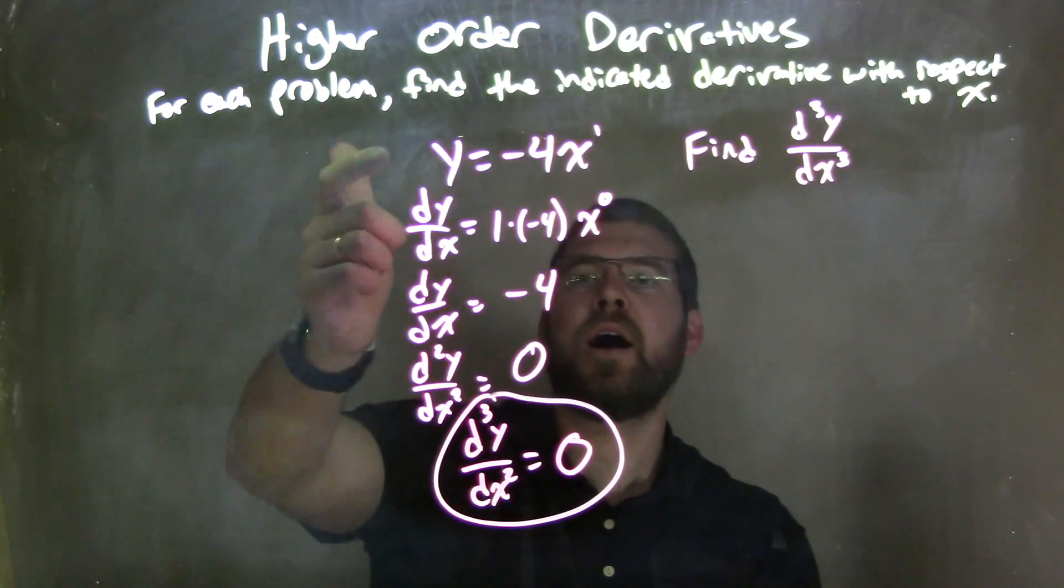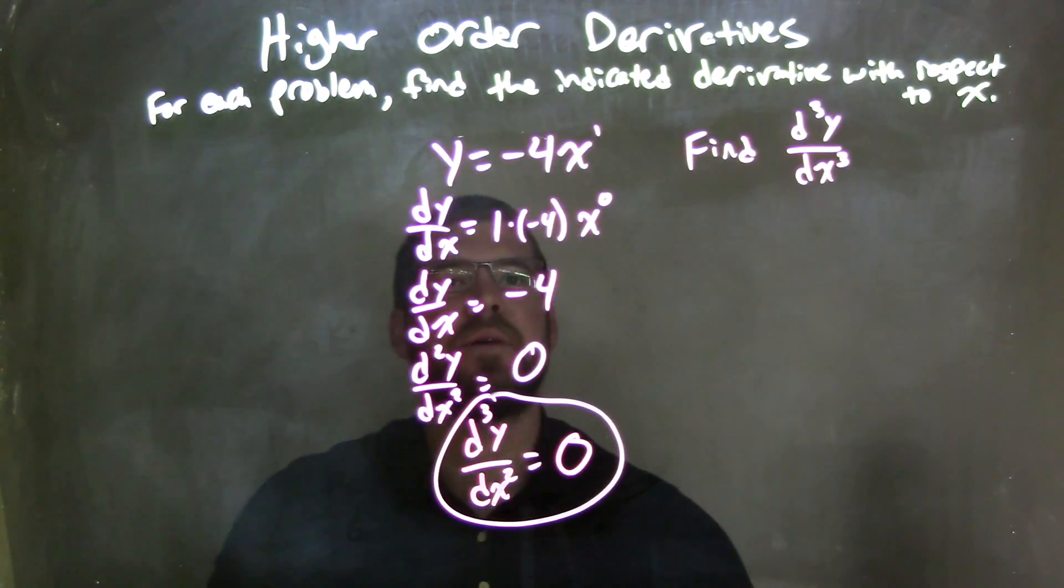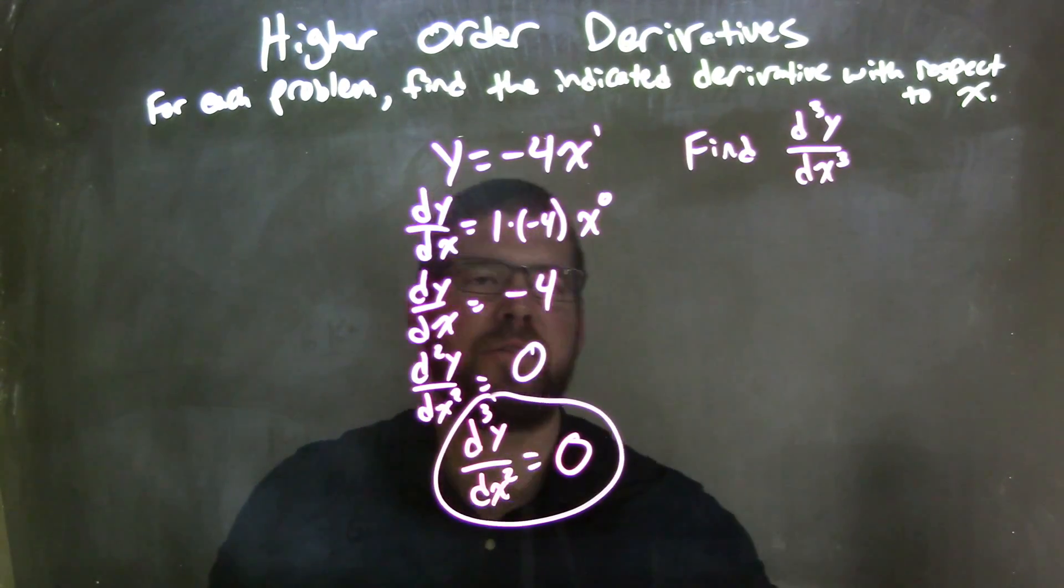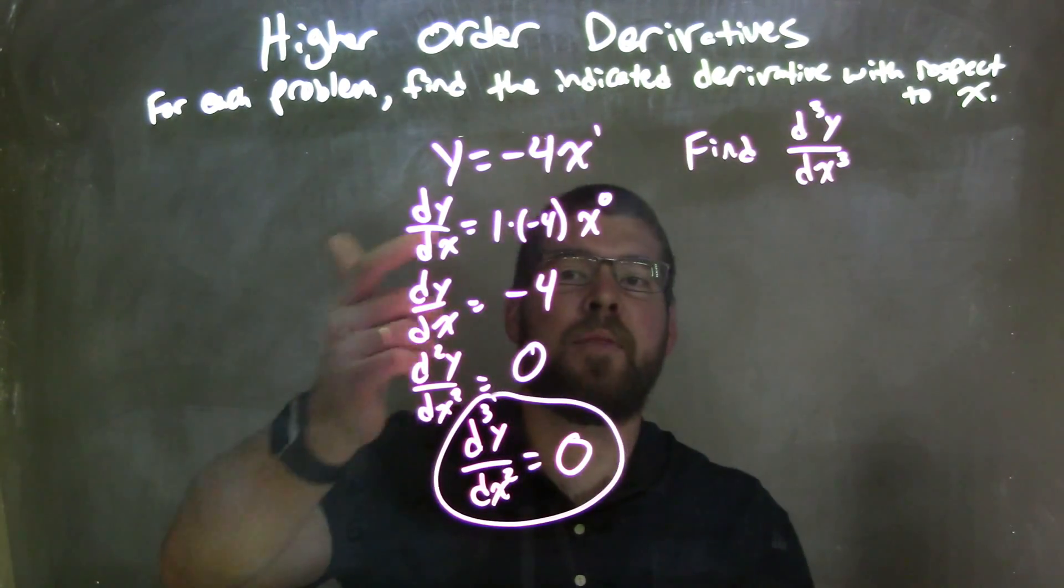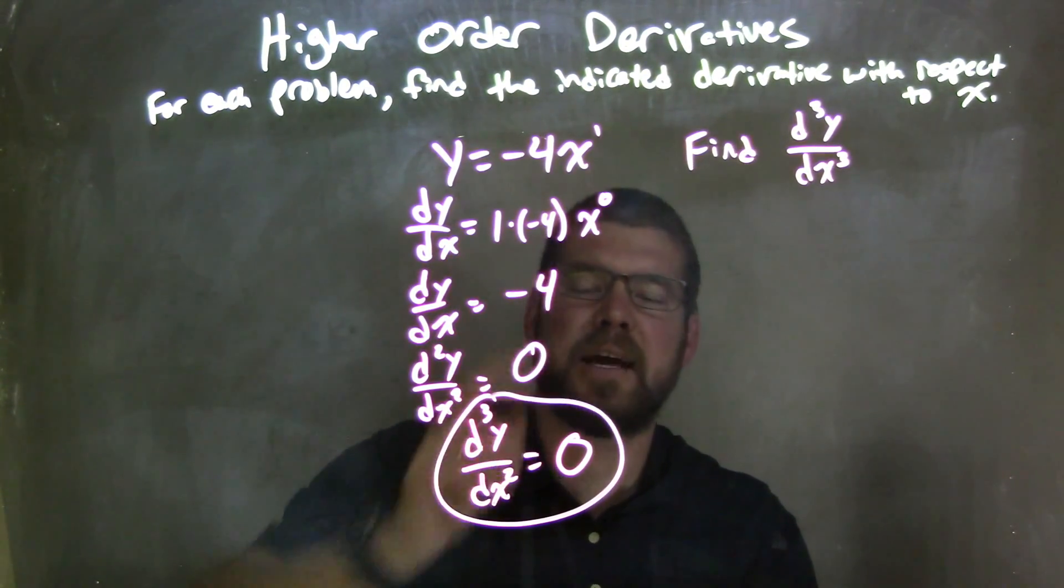So let's recap. We're given y equals negative 4x to the first power. The derivative of that, using the power rule, brought down the 1, x to the 0 power. Then we simplify that: 1 times negative 4 times x to the 0 power, which is just 1, equals negative 4.